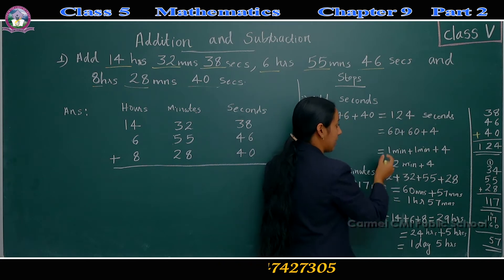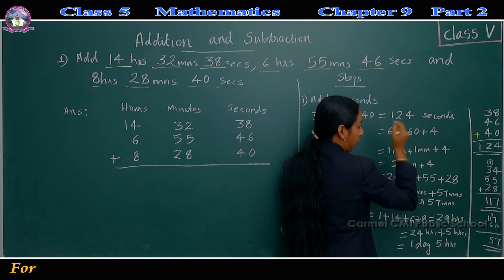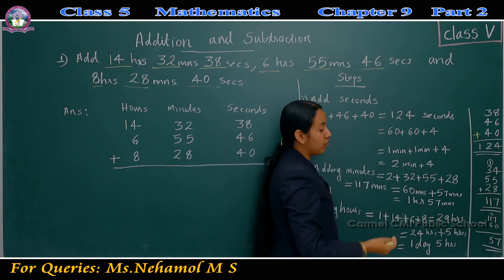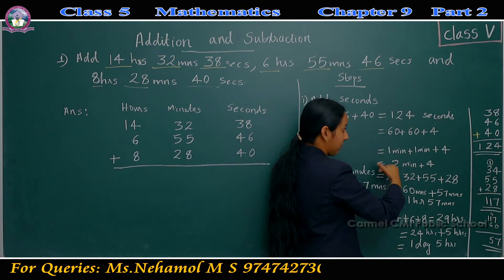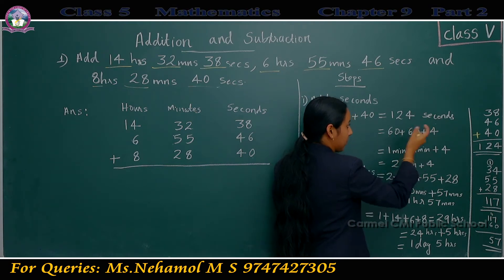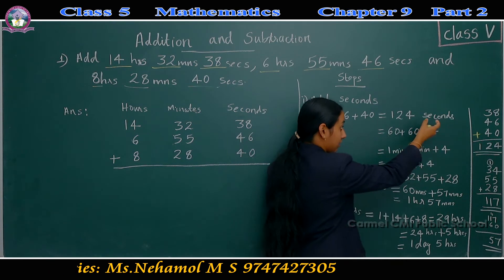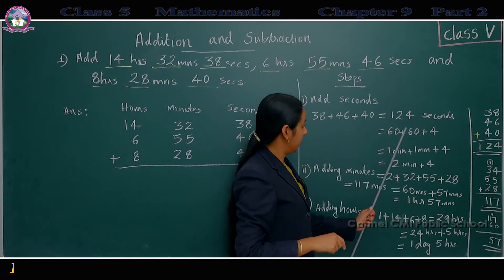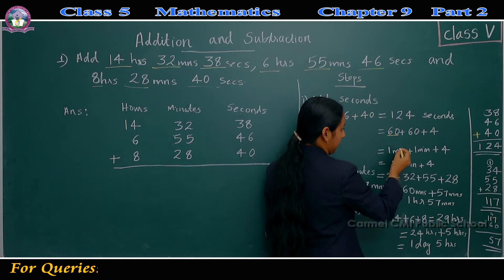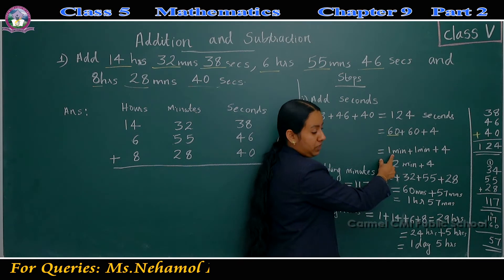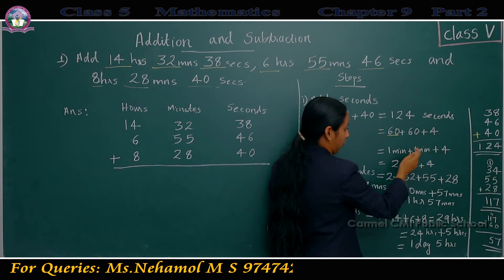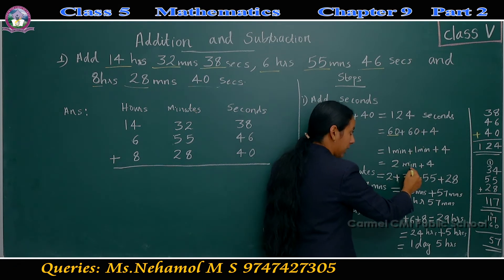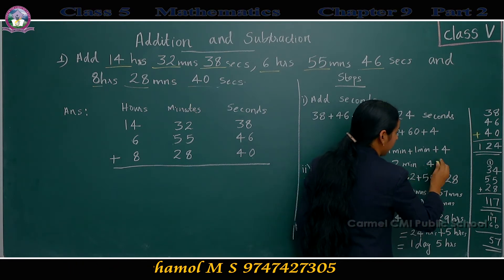We know that 124 is greater than 60. So we can split this number as 60 plus 60 plus 4. Why we use this method — if we write it as 60 plus 60 plus 4, we can convert the seconds as minutes, because 60 seconds means 1 minute. So instead of 60 seconds, we write 1 minute plus 1 minute plus 4 seconds. That gives 2 minutes plus 4 seconds.